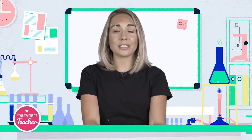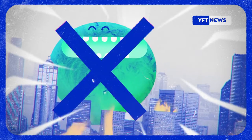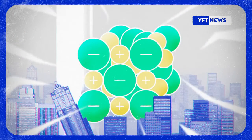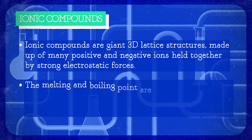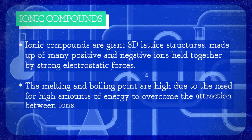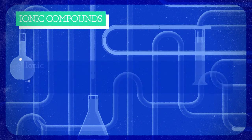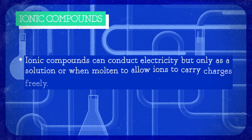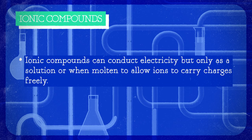So let's summarise. Ionic compounds are 3D giant lattice structures made up of many positive and negative ions held together by strong electrostatic forces. The melting and boiling points are high due to the amount of energy needed to overcome the attraction between the ions. Ionic compounds can conduct electricity but only as a solution or when melted to allow ions to move freely. I'm Miss Meeks and we've been looking at the properties of ionic compounds with your favourite teacher.